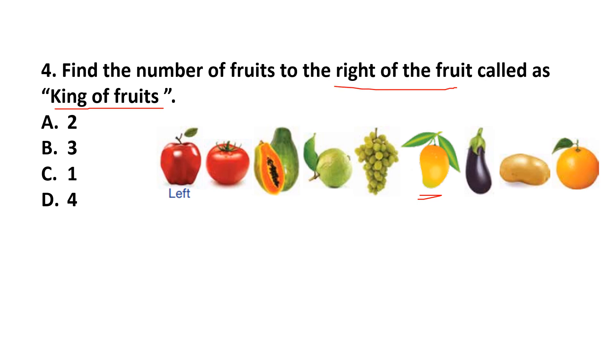This is left side. This one is right side. So, how many fruits are there right to the mango? Only one. Because brinjal and potatoes are vegetables. So, our answer is option C. One.